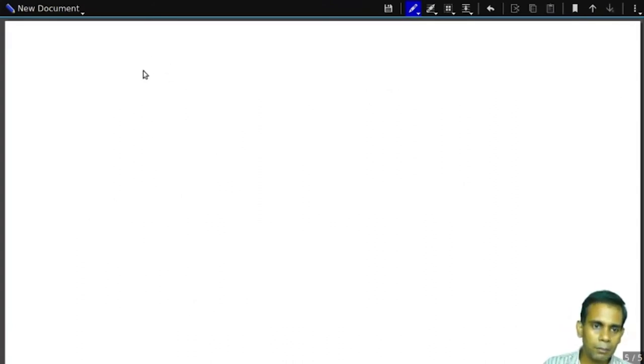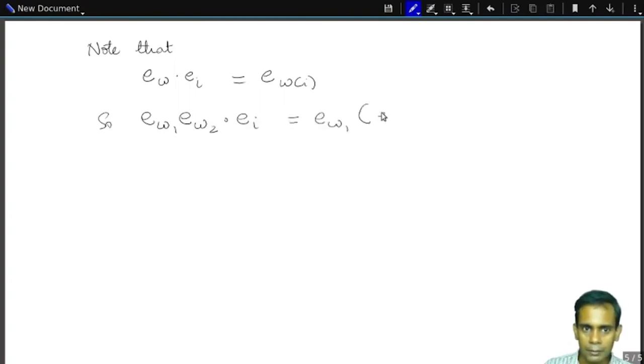But the point is that E_ω times E_I is just E subscript ω(I). You can check this by using matrix multiplication. So E_ω_1, E_ω_2 times E_I is E_ω_1 times ω_2 times E_I. Well, that's E_ω_1, E_ω_2 times E_I, but that's E_ω_1 times ω_2 times E_I, which is the same as E_ω_1 times ω_2 times E_I, as claimed.